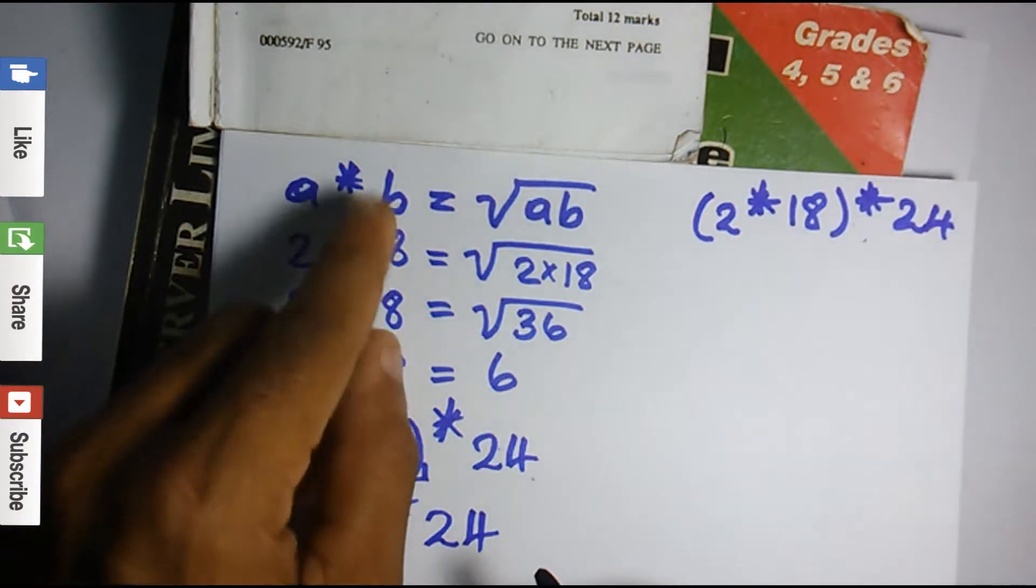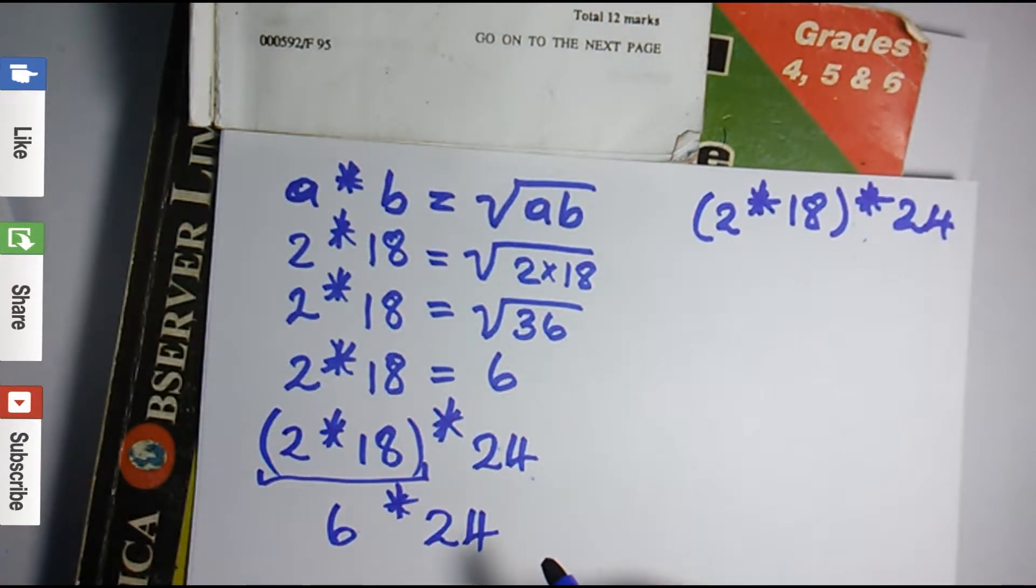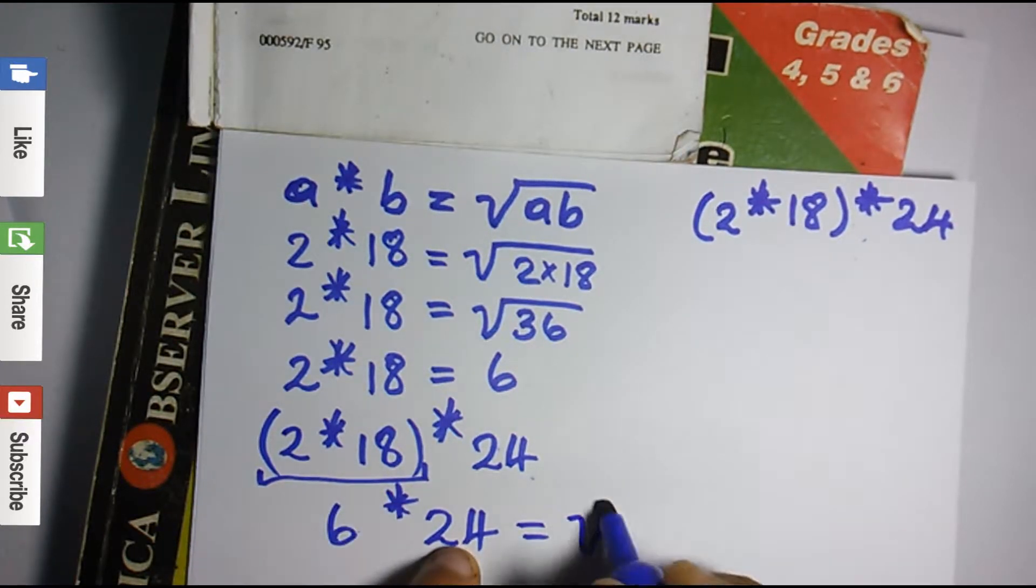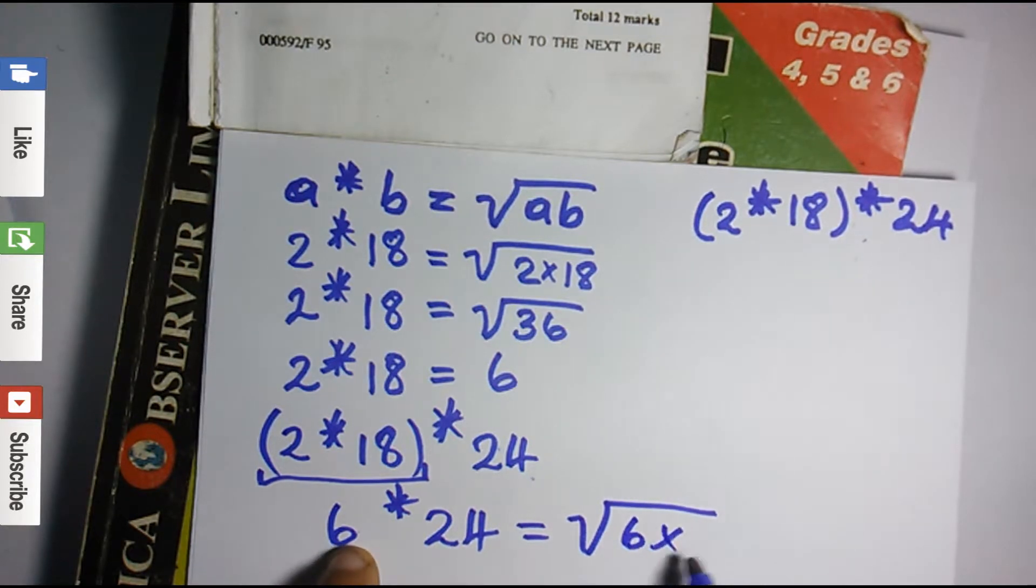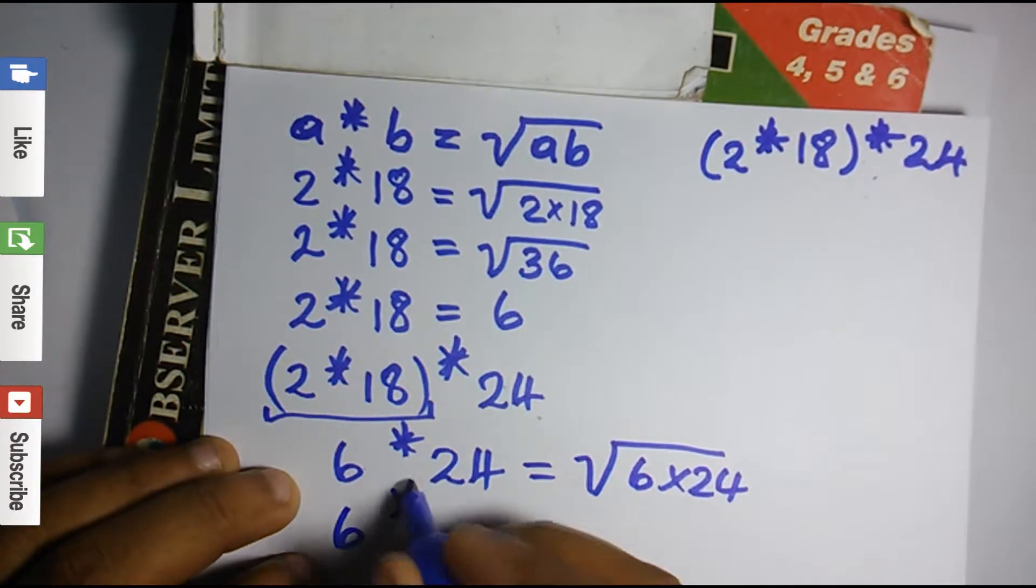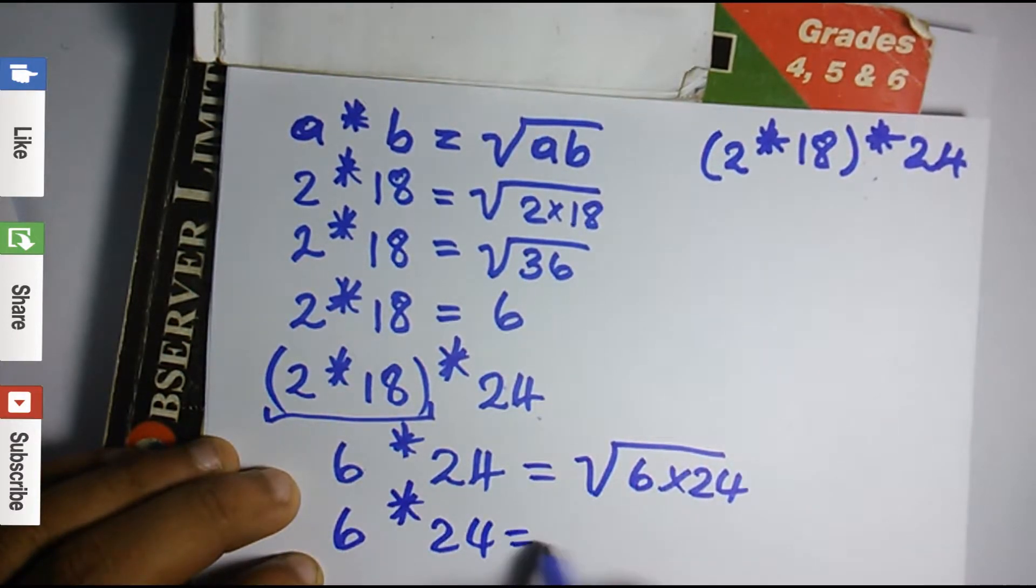So remember, a has a new value of 6 now, and b has a new value of 24. So 6 asterisk 24 equals the square root of a times b. In this case, it's 6 times 24.